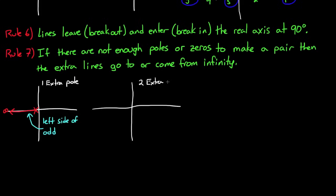And if you have a system with two poles and no zeros, then you have two extra poles. And these two poles come together because it's to the left of an odd critical frequency. They crash into each other, they both leave the real axis at 90 degrees, and then they go off to infinity.